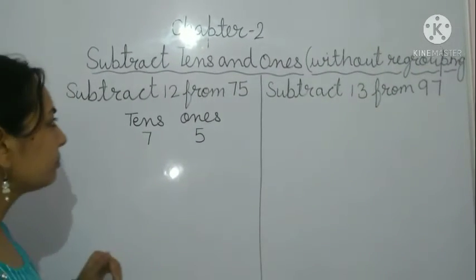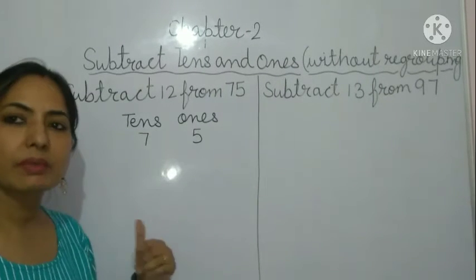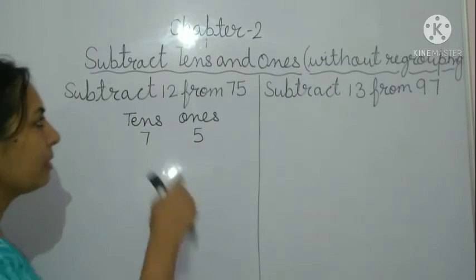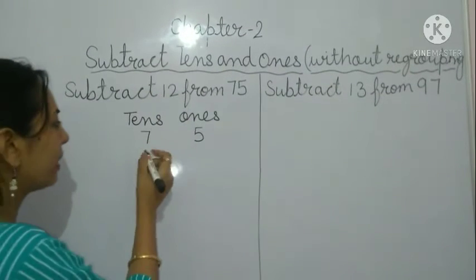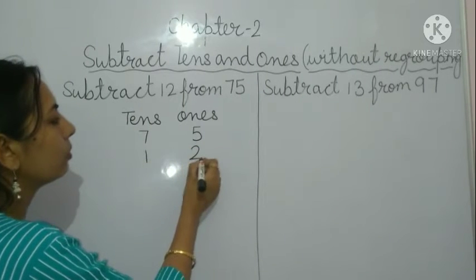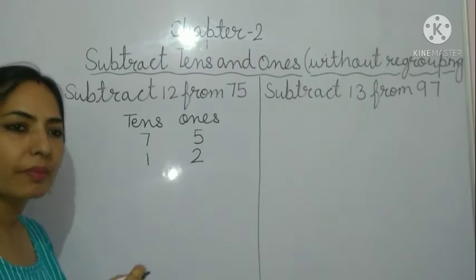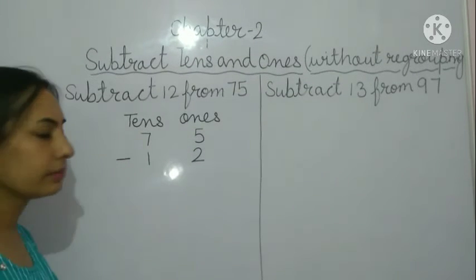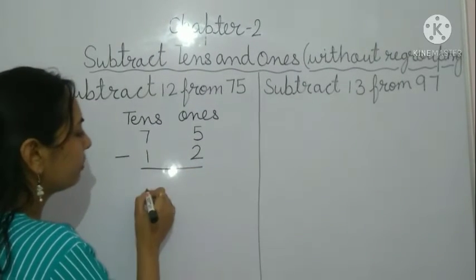Now we have to subtract 12. We write 12 below: one ten and two ones. We put the sign of subtraction and now we are going to subtract them.